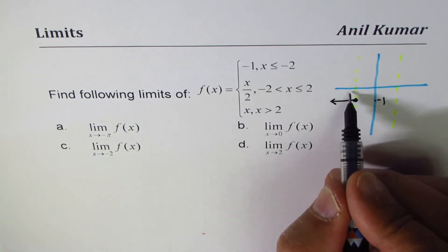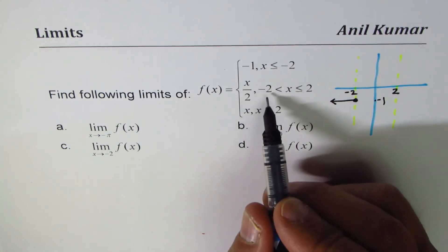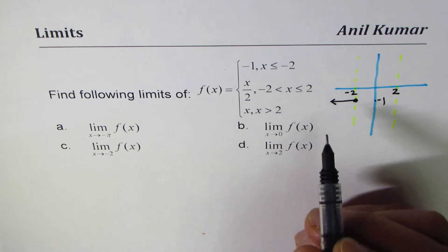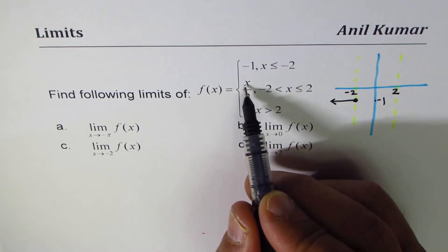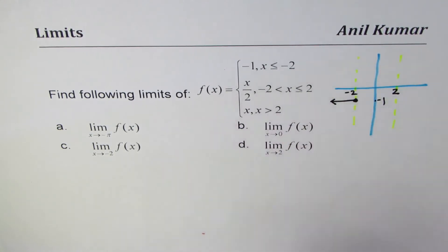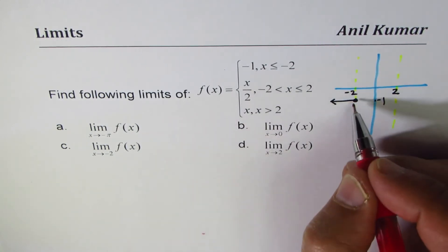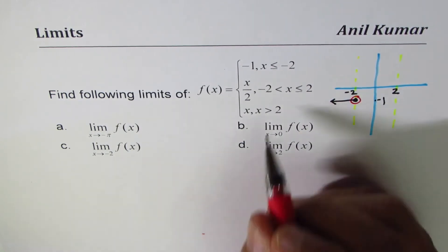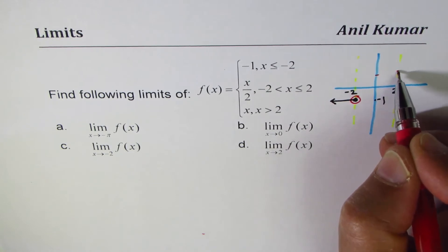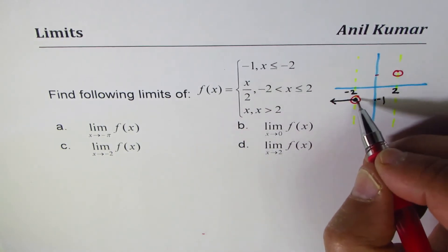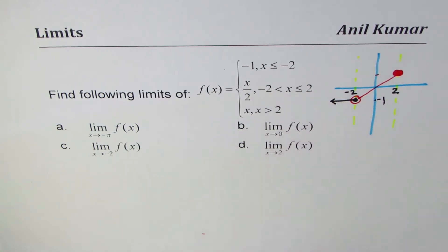For the middle piece, x is between -2 and 2, and the function is x/2 — half the value. Since -2 is not included in this piece, we start with an open circle. Substituting -2 gives -1, the same point as the first piece but as an open circle. Substituting 2 gives +1, which is a filled circle since 2 is included. Substituting 0 gives 0, so it is a straight line joining these two endpoint values.